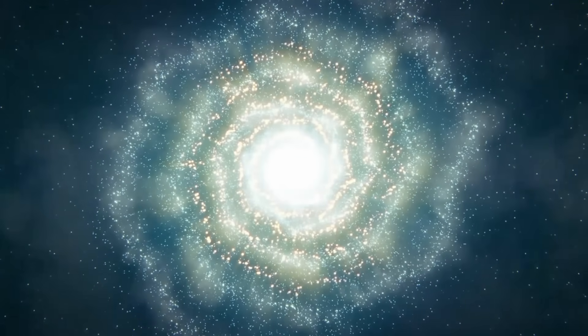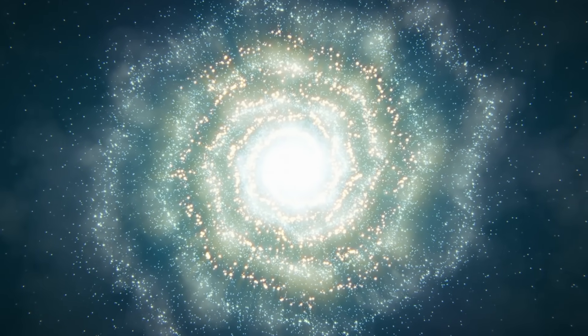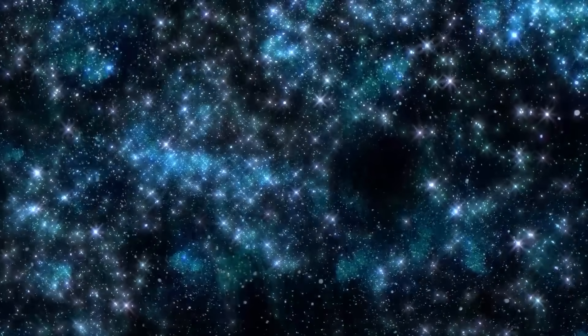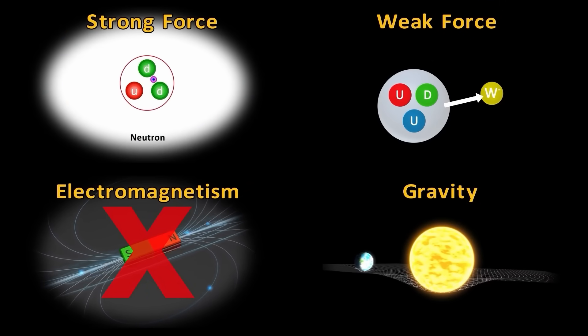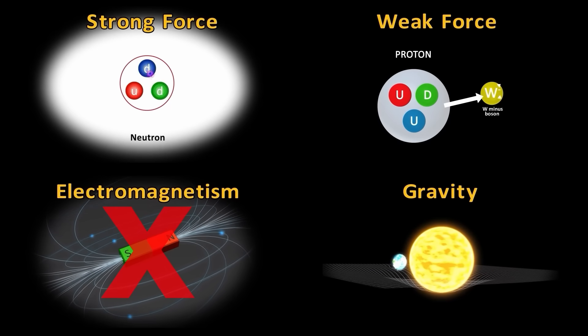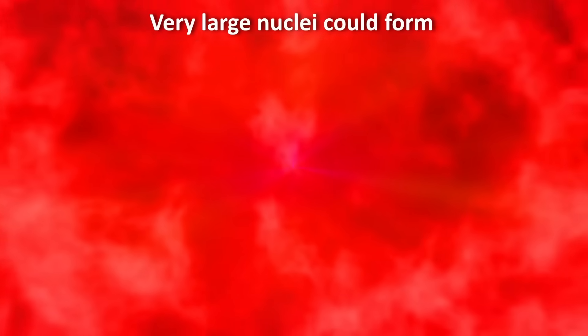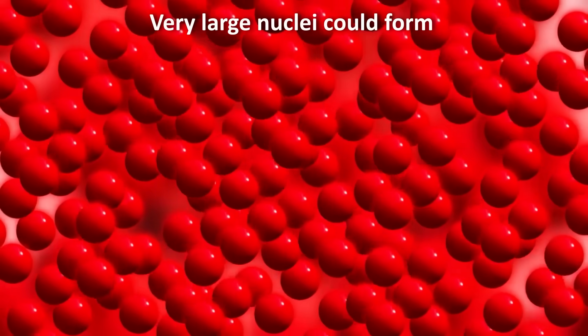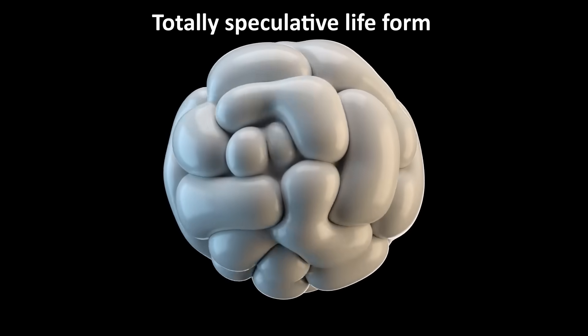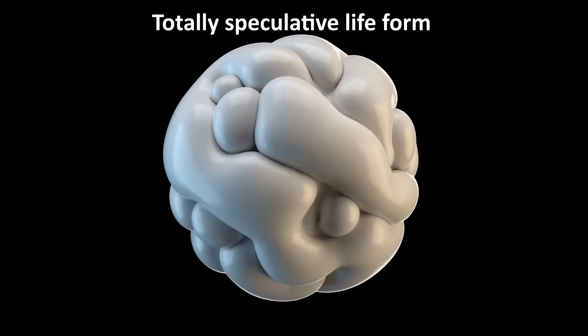Now the universe could still exist if we took the electromagnetic force and threw it out the window, but it would not resemble the universe we know. We would still have gravity, the strong force, and the weak force, so we could still form nuclei and have certain nuclear decays. Very large nuclei could probably form in such a universe, since there would be no electrostatic repulsion between protons which prevents very large nuclei from forming. Life as we know it would not exist without light, but could some other form of life exist? Hard to say, because we know of no other mechanism for life other than what we see in this universe — but I don't think we can rule it out.